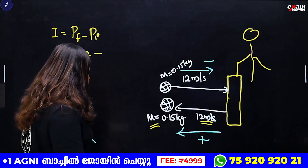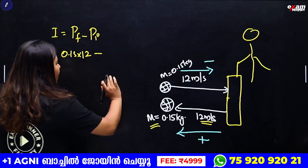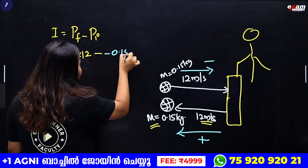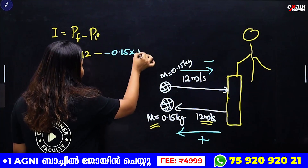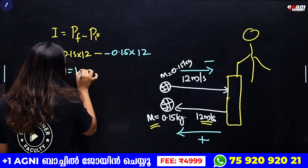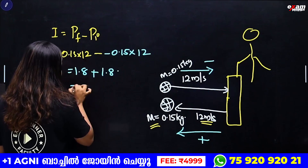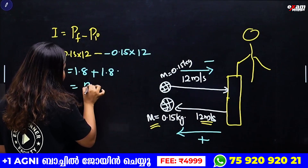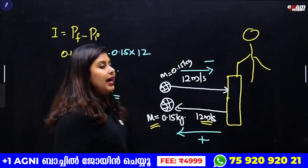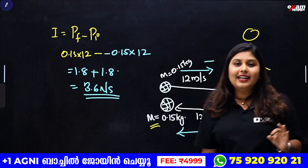Taking the return direction as positive, the initial velocity is negative. So impulse = 0.15 × 12 − (−0.15 × 12) = 1.8 + 1.8 = 3.6 Ns. This is the impulse.